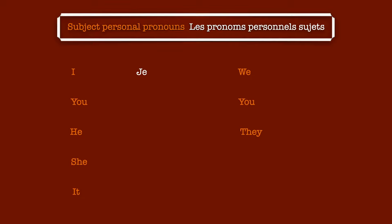The first column is for singular, and as you can see, 'I' is said 'je.' As I said before, there are two 'you' in French, and the first and singular one is translated by 'tu.'